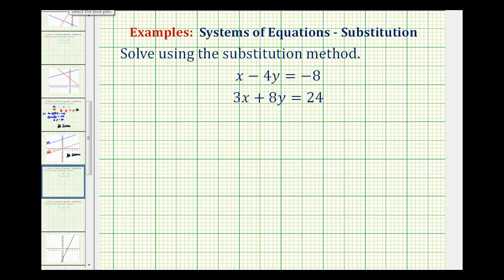So to keep things organized, let's call this equation one and this equation two. The first step in the substitution method is to solve one of the equations for one of the variables. Notice if we look at the first equation, we can pretty easily solve this equation for x, just by adding four y to both sides of the equation. So let's start by doing that.